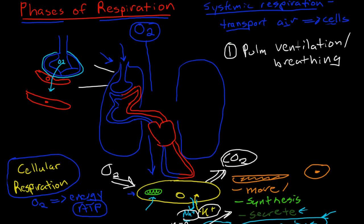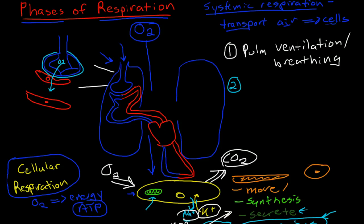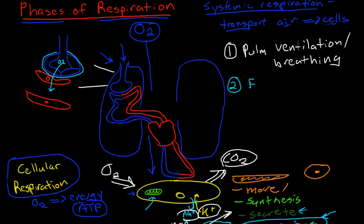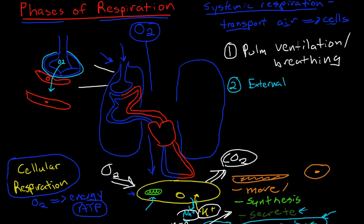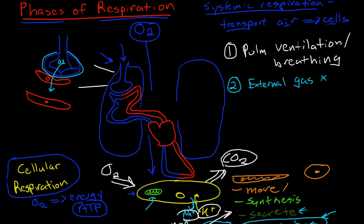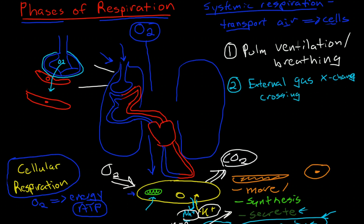So crossing this membrane is the second phase and it's called external gas exchange. Why is it called external gas exchange? Well, because it's coming from the external environment into the internal environment of the bloodstream. So external gas exchange involves crossing the alveolar capillary membrane.